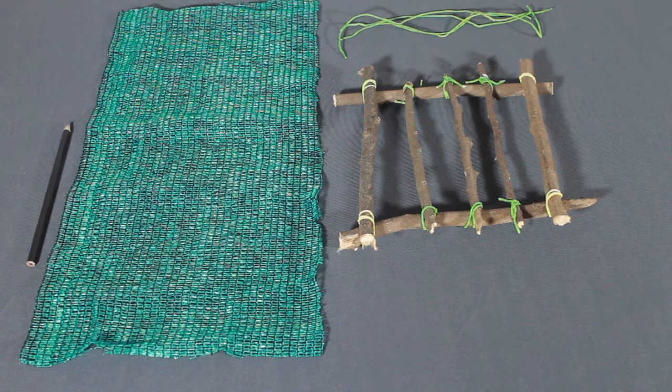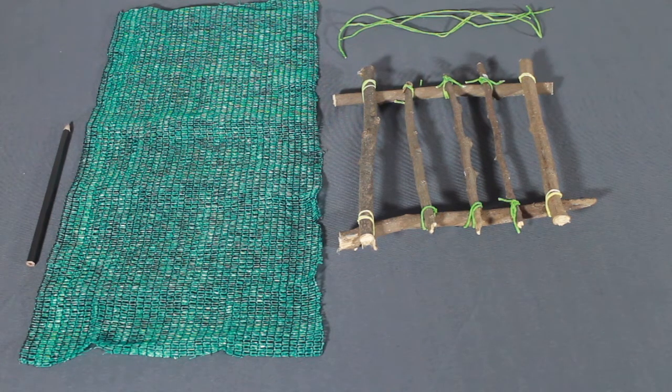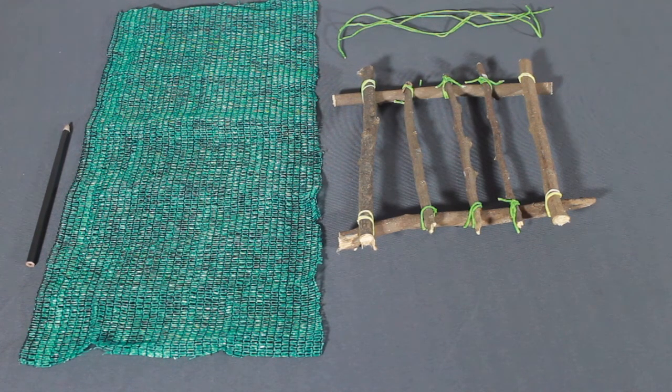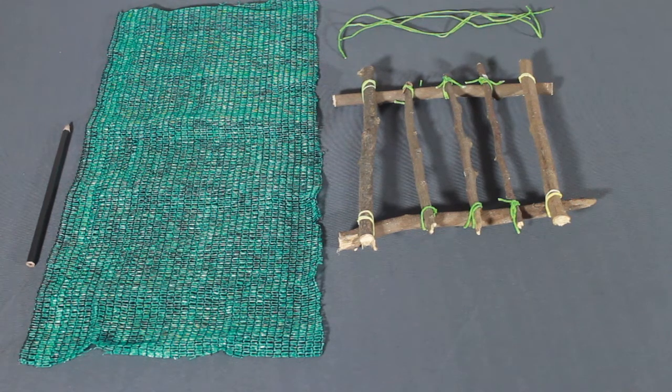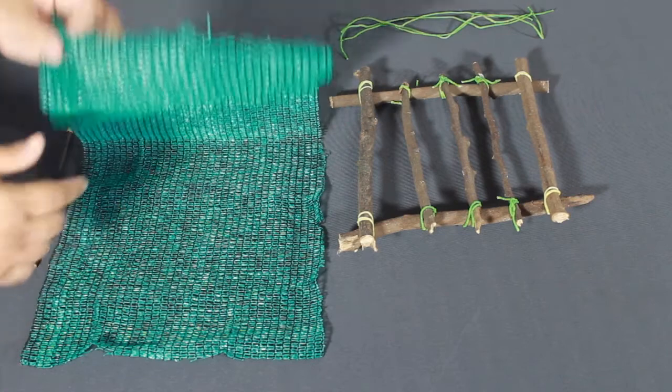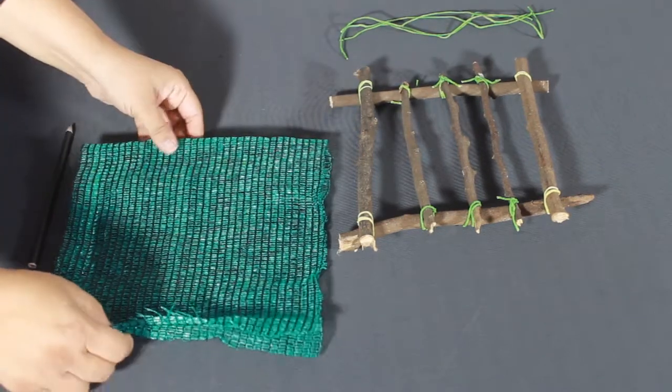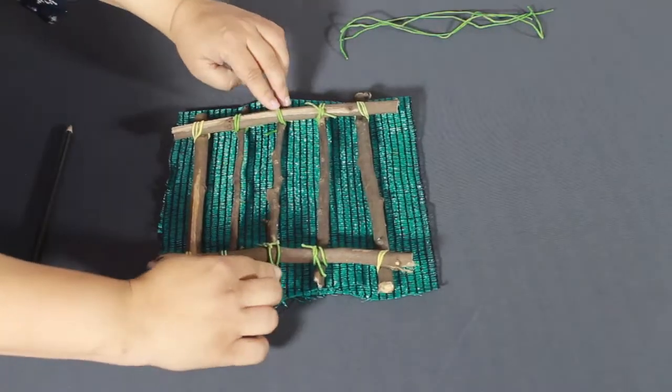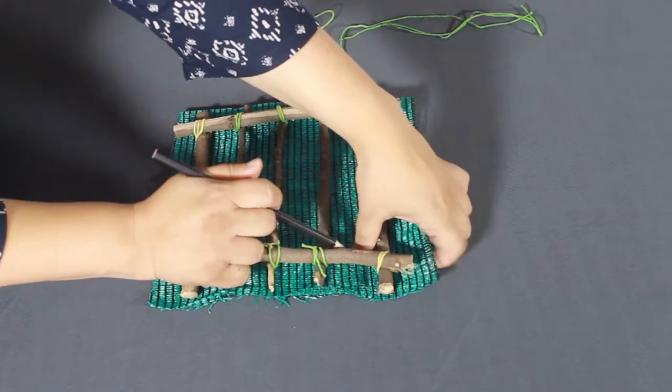For our demonstration, we are going to use netting as it is quite light, water can still reach the plants, and it will still hold the soil in it. We will now add the netting to our frame. We will add two layers of the net so that it can hold the soil in place. Now we will secure the net to the frame with strings.